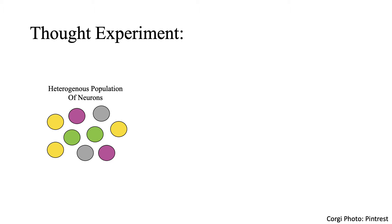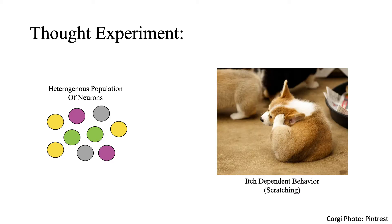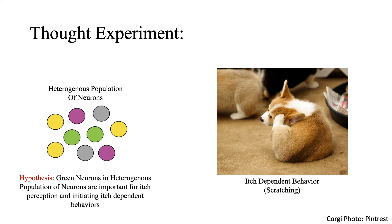I would like to begin today's Techniques video with a thought experiment. Imagine that within a heterogeneous population of neurons, you had come to hypothesize that a specific subpopulation of these neurons played an important role in a specific behavior. For our purposes, let's use itch as an example. Perhaps your hypothesis was that green neurons in this subpopulation are important for itch perception and initiating itch-dependent behaviors such as scratching. An ideal way to test this hypothesis would be to somehow specifically manipulate the activity of these green neurons and ask if changes in their activity drive changes in animal behavior. This would work to establish a causal role between this population of neurons and itch perception.